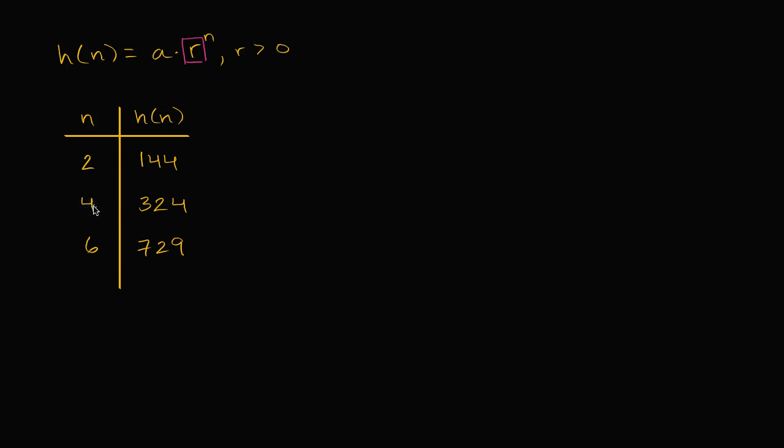But we can get pretty close to that. We can just find the ratio between h of 4 and h of 2. So h of 4, the ratio between h of 4 and h of 2 is going to be equal to, well, we know h of 4 is 324 and h of 2 is 144.